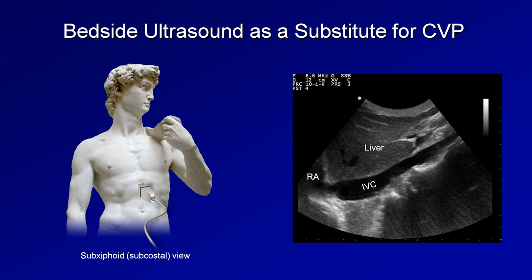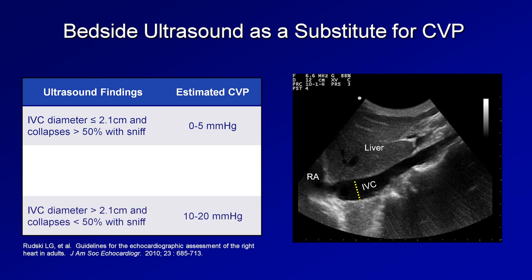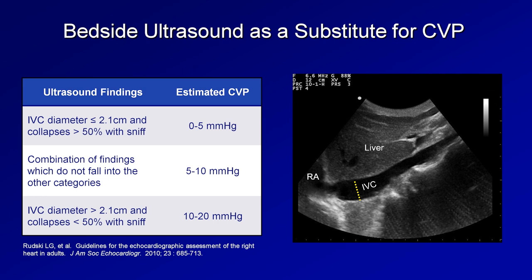Echocardiographic studies show a rough correlation between CVP and the maximum width of the IVC and its collapsibility with abrupt inspiration — replicated with a quick sniff. If the IVC's maximum diameter is ≤2.1 cm and it collapses more than 50% with sniff, estimated CVP is 0–5 mmHg. If the IVC's maximum diameter is >2.1 cm and it collapses less than 50%, estimated CVP is 10–20 mmHg. Either combination not fitting those categories suggests a CVP of 5–10 mmHg — for example, a dilated but collapsing IVC, or a non-dilated and non-collapsing IVC.